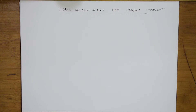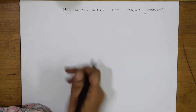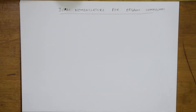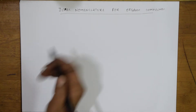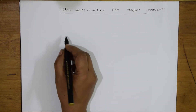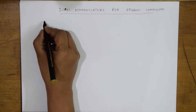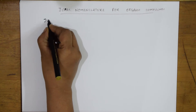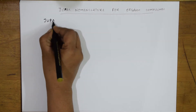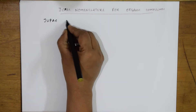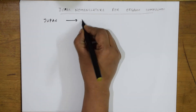First, before going into the topic, let us see what are the general rules you need to follow for doing the IUPAC nomenclature for organic compounds. The first important thing is, whenever we speak about IUPAC nomenclature, it is going to denote only the molecular structure.